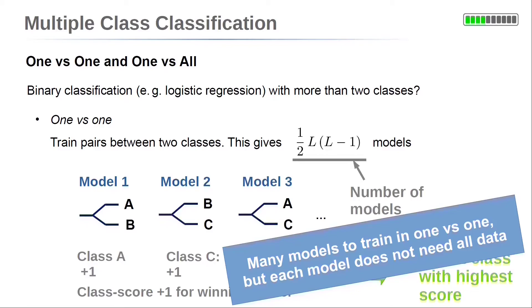In general, the number of models to train in one versus one is larger because the number of classes capital L is quadratic in the number of models. But each model does not need all of the data because it is limited to only two classes.